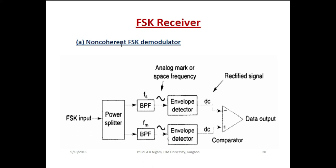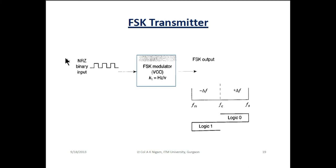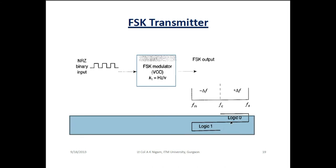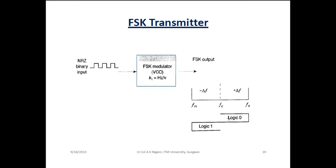In the case of the frequency shift keying receiver, the coherent FSK demodulator — the FSK input means mark and space signal in the form of maximum and minimum frequency — will be given to the power splitter. In the FSK transmitter, whatever binary data is provided, it is first given to the FSK modulator. The FSK modulator generates output in the form of frequency: logic 0 and logic 1 are transmitted as mark and space signals in the form of frequency. Hence this technique is called frequency shift keying modulation.